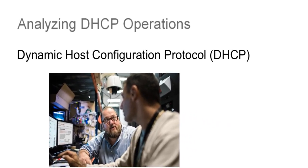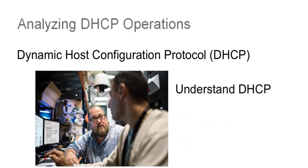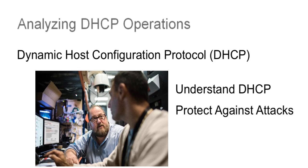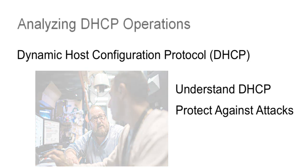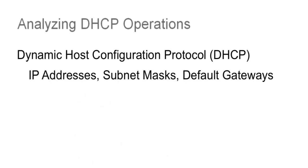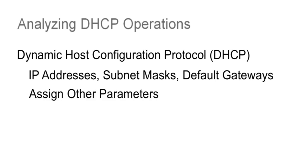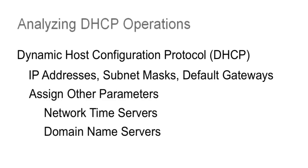Therefore, it's necessary for engineers to fully understand the functionality of DHCP in order to protect the enterprise against the various attacks that can target DHCP. DHCP not only dynamically assigns IP addresses, subnet mask, and default gateways, it can also assign other parameters such as network time servers and domain name servers.